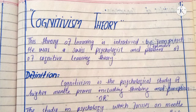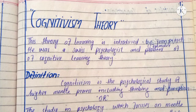Cognitivism is the psychological study of higher mental processes including thinking and perception. یہ ایک psychological study ہے higher mental process کی۔ پہلی theory behaviorism میں BF Skinner کہتے تھے کہ learning mental process میں involved نہیں ہے، لیکن Cognitivism کہتی ہے کہ learning dependent on mental process ہے — مطلب کس طرح سے دماغ کام کرتا ہے اور ایک چیز کو understand کرتا ہے۔